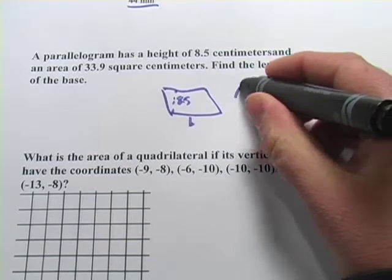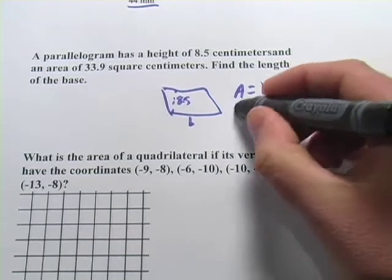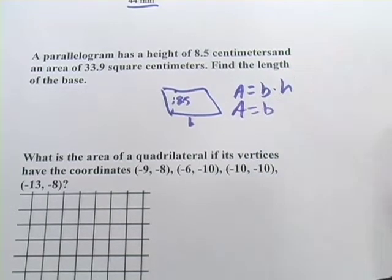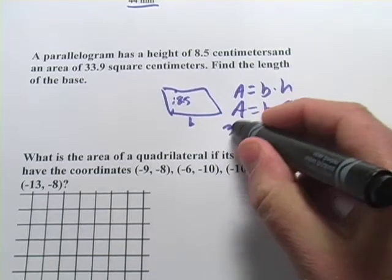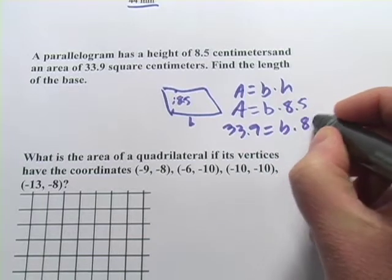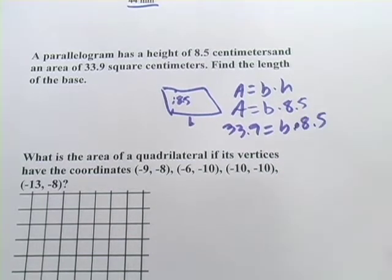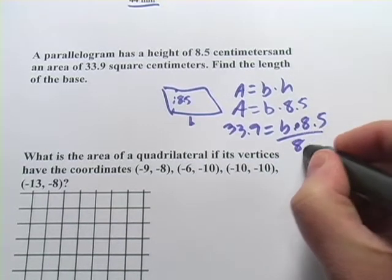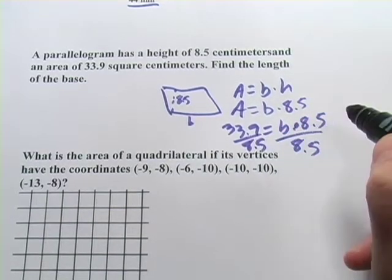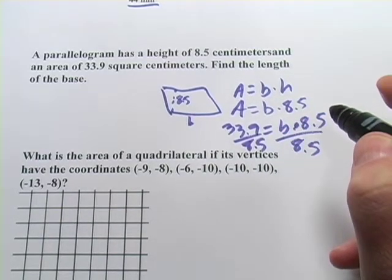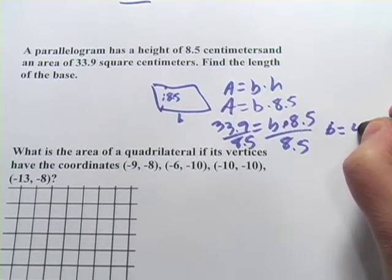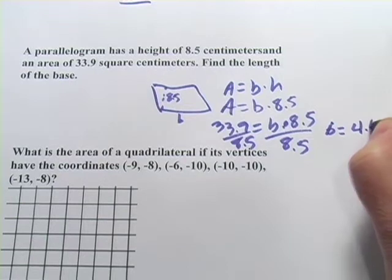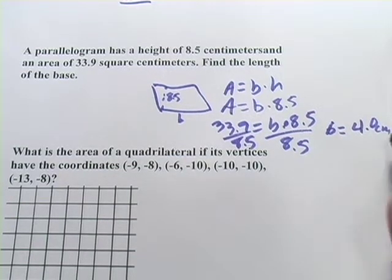But we do have our formula, area equals base times height. And we can leave base in there as unknown, but our height is 8.5. We do know area, it's 33.9. Now to solve for b, all we have to do is divide both sides by 8.5. And that should be base equals 4.0 centimeters. Also not squared in this case, remember this is just the length of one of the sides.